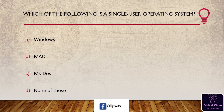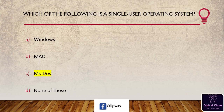Next question: which of the following is a single user operating system? Options: Windows, Mac, MS-DOS, none of these. The right answer is C, MS-DOS. The single user operating system is the operating system in which only one user can access the computer system at a time, and MS-DOS is the best example of a single user operating system.